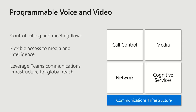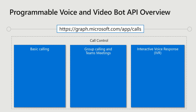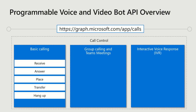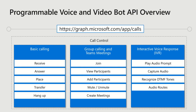Here's a summary of the high-level capabilities of the voice and video platform. You can manipulate and perform call control operations, integrate directly with the media, and take advantage of various network intelligence features built into the platform. You can also leverage cognitive services, whether it's speech-to-text or translation services available through Microsoft. The available APIs under Microsoft Graph model complex calling workflows through traditional RESTful patterns. Across the scenario categories of basic calling, group calling and meetings, and IVR — all the different operations are supported: placing a call, receiving, transferring, managing meeting participants, or playing audio prompts and capturing DTMF tones.